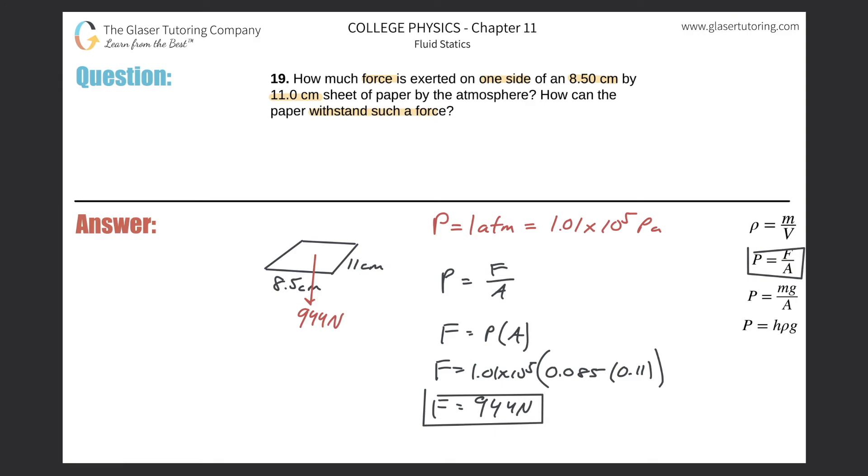The idea here is that the air, the atmosphere, surrounds this piece of paper. So whatever pressure the air is pushing down here is also equal to the pressure that the air is pushing up from the bottom. And therefore, that being the case, we know that if one side of the paper is experiencing 944 newtons, the other side is also experiencing 944 newtons of force as well.